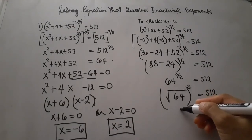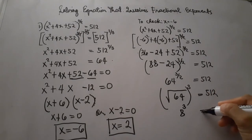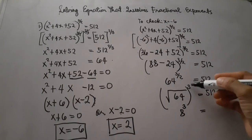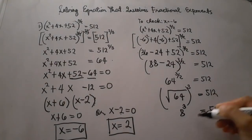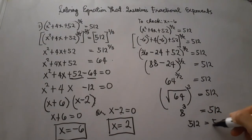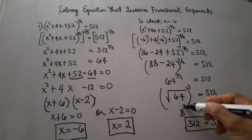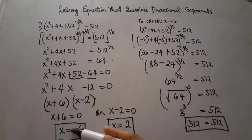Using the radical sign, 64 raised to the power of 3 halves becomes the square root of 64, raised to the power of 3. The square root of 64 is 8, and 8 raised to the power of 3 is equal to 512. So 512 equals 512, confirming that x equals negative 6 is correct.